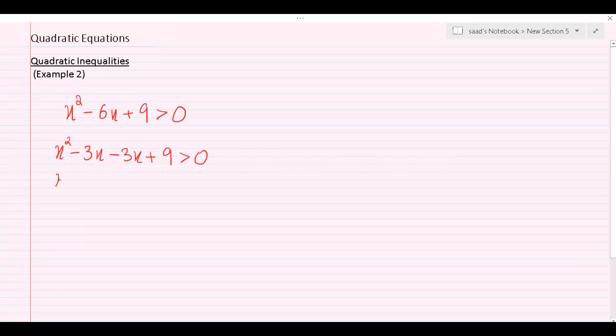In this pair I can factor out x so that will give me x bracket open x minus 3. In the next pair I can factor out minus 3 so that will give me minus 3 bracket open x minus 3 again. Now let's rearrange them. So (x-3) times (x-3) is greater than 0.